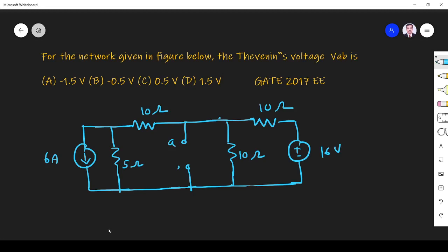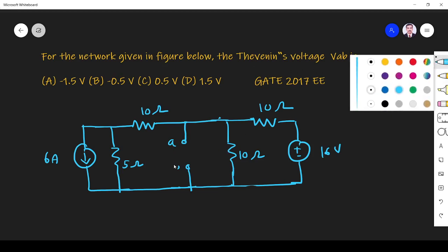Hi friends, in this video let us solve a network theory related question asked in GATE 2017 EE paper. The question is: for the network given in the figure, the Thevenin's voltage Vab is... So they ask for Thevenin voltage across this element.